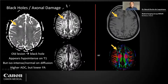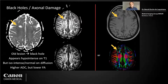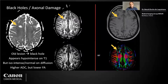For the diffusion tool, you can use it for axonal damage like black holes. All old lesions will be a black hole — slightly hypointense on T1, and isointense or normal on diffusion, with higher ADC and lower FA, as seen on the orientation color map. There are a few phenotypes of disease: relapsing-remitting, secondary progressive, and primary progressive.